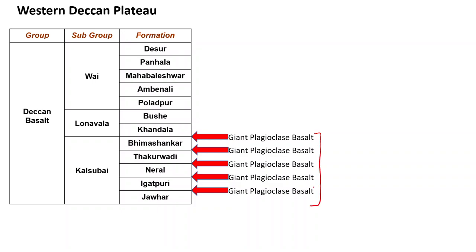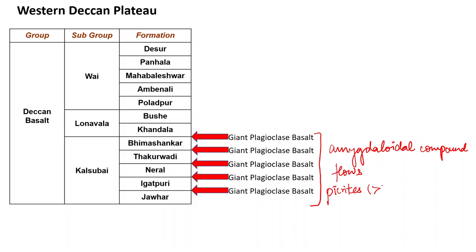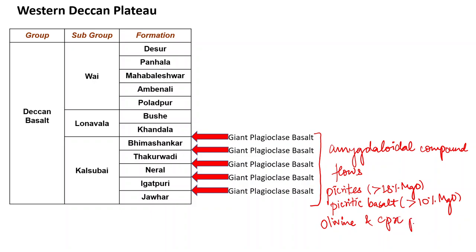The Kalsubhai group consists of amygdaloidal compound flows. These are mostly Picrites — rocks with more than 18% MgO. Picritic basalts with more than 10% MgO are also present. These rocks have olivine and possibly clinopyroxene (CPX) phenocrysts.